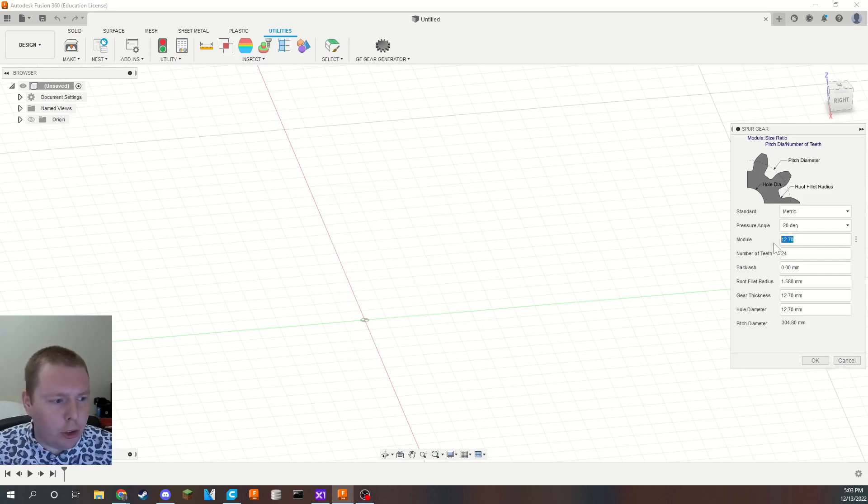I usually use a module of two. Module just defines how big your teeth are. And then number of teeth, I try to get it about the size of a sheet of paper. I think a sheet of paper is 280 millimeters long. My printer has a max size of 220 millimeters anyway, so I'll do maybe 100 teeth? Is that too much?